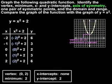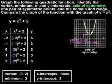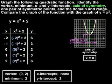Next, we're asked to find the axis of symmetry, which is the fold line for the parabola, or the line that splits the parabola down the middle, which in this case is the y-axis. And the equation of the y-axis is x equals 0.